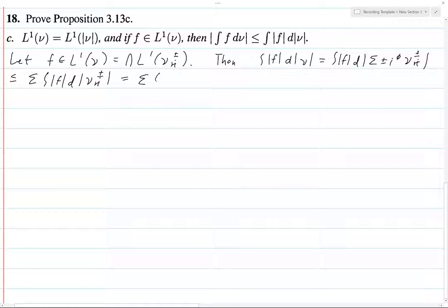Well, these are all positive measures, so we don't need that absolute value sign. We can just write this ∫|F| dν_{ri}^{±}. This is going to be finite since F is in all four of these L^1 spaces. And thus, by definition, this means that F is in L^1(ν).